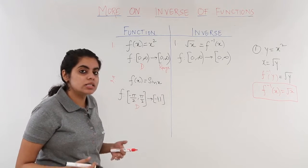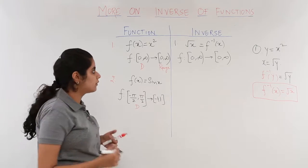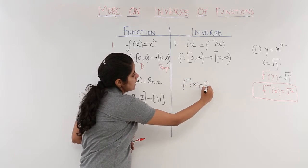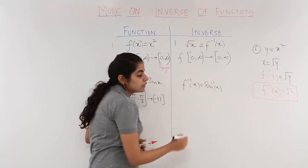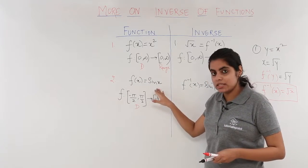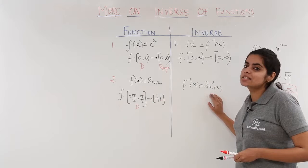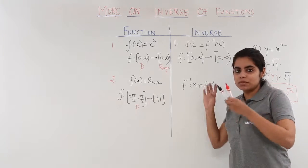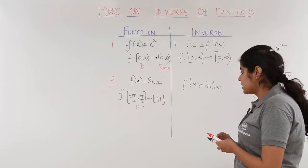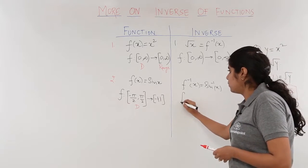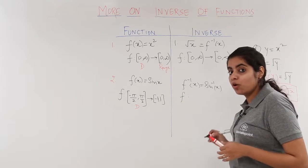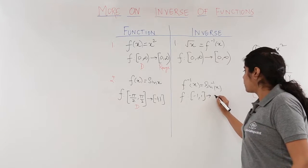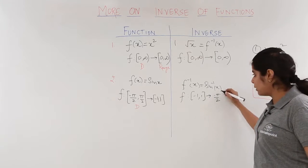The inverse of sin x, written as f⁻¹(x) = sin⁻¹x. The change in domain and range: the domain becomes the range and the range becomes the domain. So the function now maps from -1 to 1 to -π/2 to π/2.